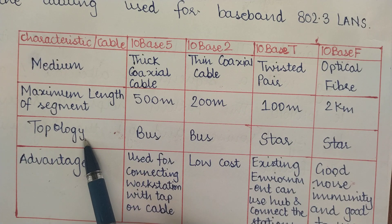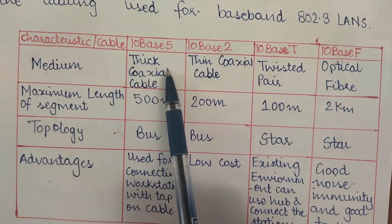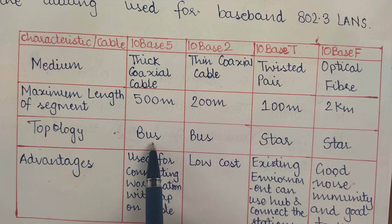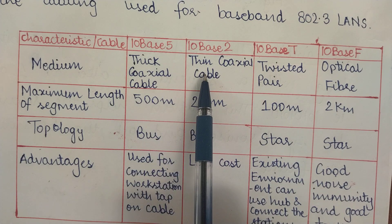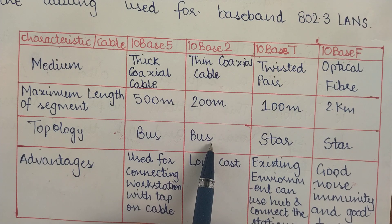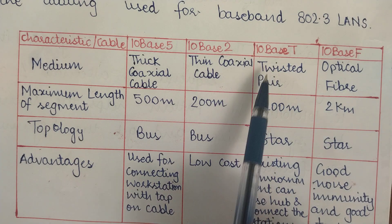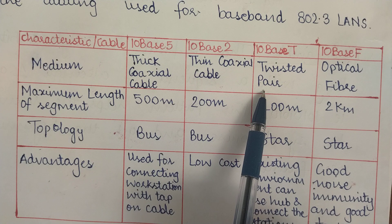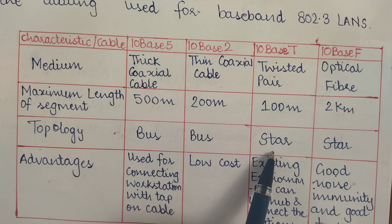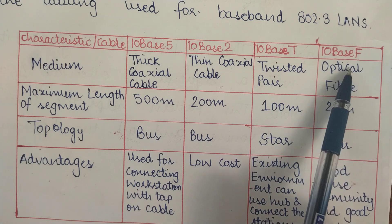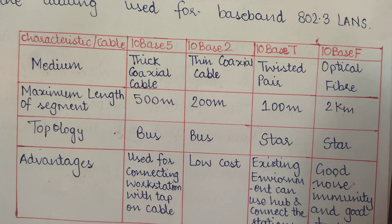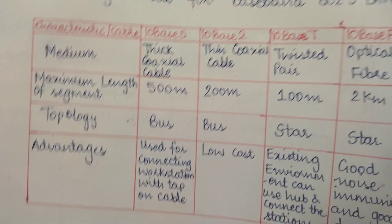Regarding topology: for thick coaxial cable (10Base5), the topology is bus. For thin coaxial cable (10Base2), the topology is also bus. For twisted pair (10BaseT), the topology is star. And for optical fiber (10BaseF), the topology is also star.